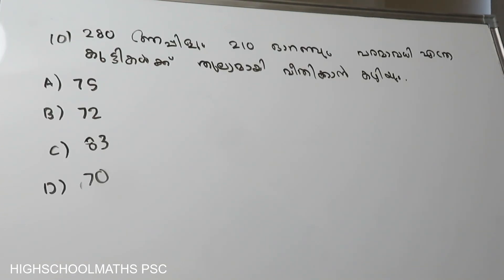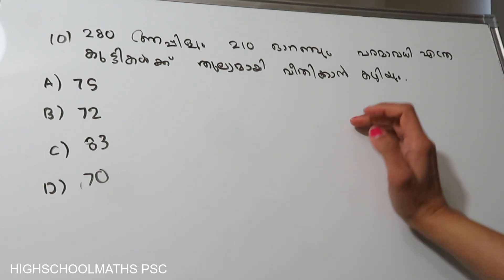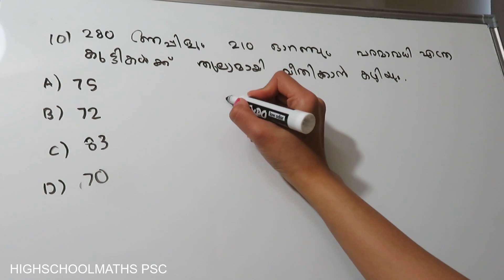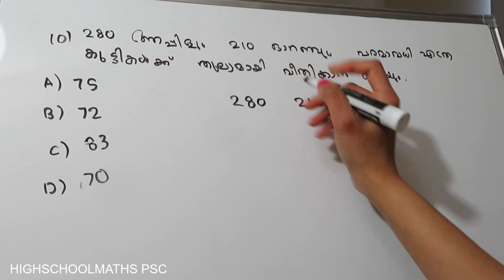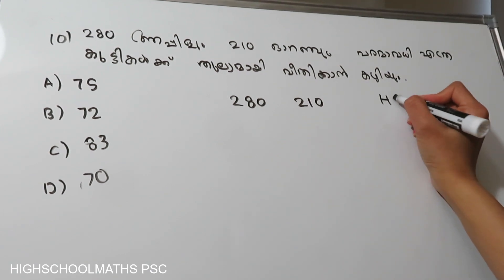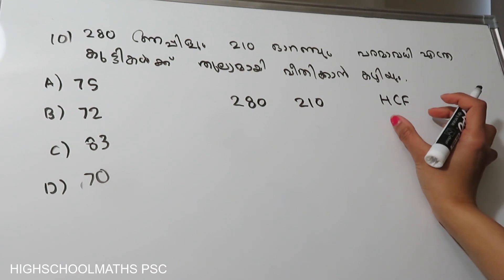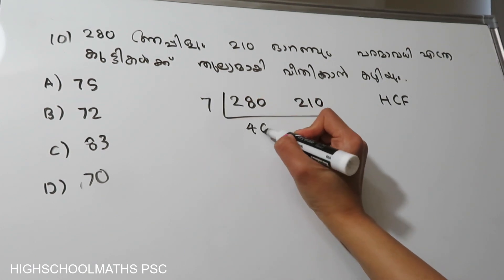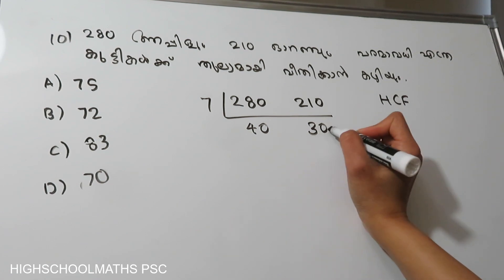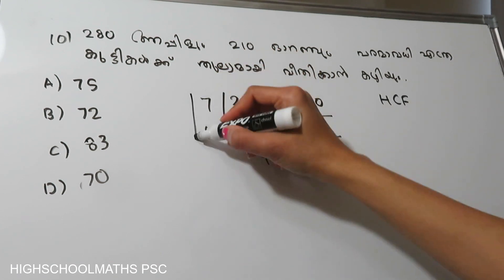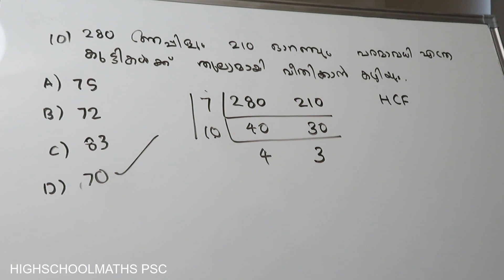As per the question, the maximum number of students among which 280 apples and 210 oranges can be equally divided. We have two numbers here, 280 and 210. We can check the HCF. First we will write 7 divides. 7 is 4 times, then 50. 7 is 3 times, then 30. If we stop with this, we will multiply. 10 is 7, then 80. Option D is the right answer.